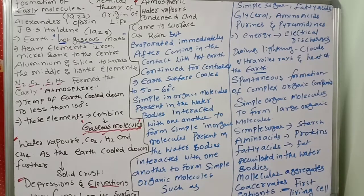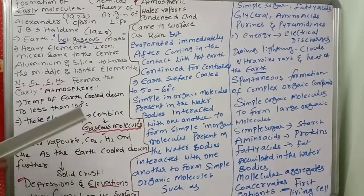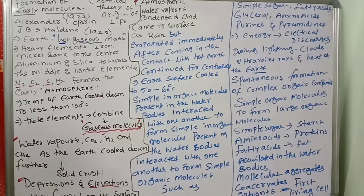The temperature of the earth cooled down to less than 100 degrees centigrade. Then all these elements combined to form gaseous molecules like water vapor, carbon dioxide, hydrogen, and methane. As the earth cooled down further, it formed the solid crust, and depressions and elevations were formed on its surface.